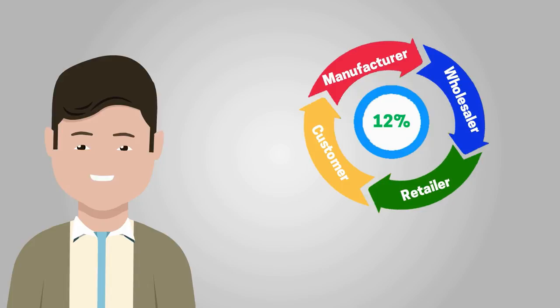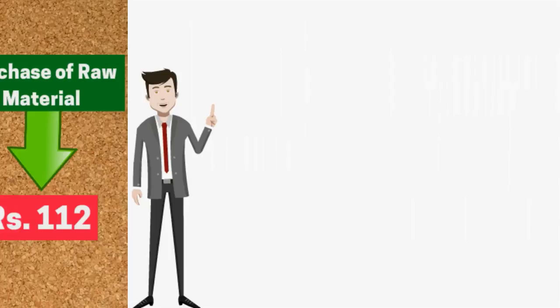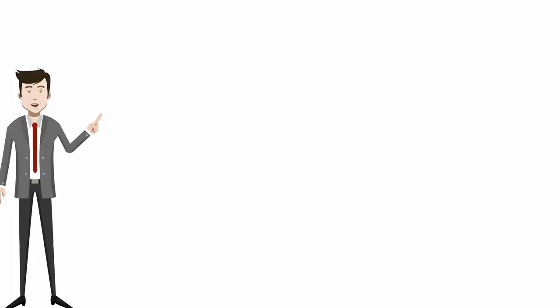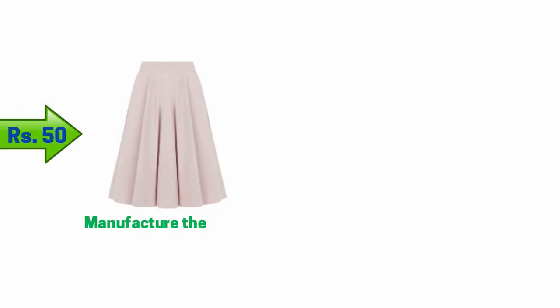For example, if a manufacturer buys raw material — cotton — at 100 rupees, he has to pay a tax of 12%, making the total cost 112 rupees. This cotton then goes to the next stage of production, i.e. manufacturing of the skirt. Assuming an additional cost including margin of 50 rupees, the total becomes 162 rupees, and adding 12% tax, the total cost after manufacturing comes to 181 rupees and 44 paise.